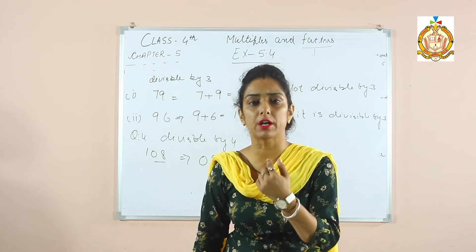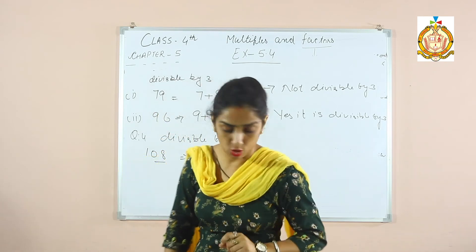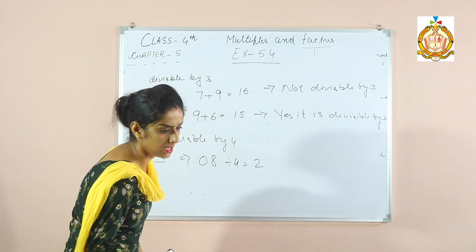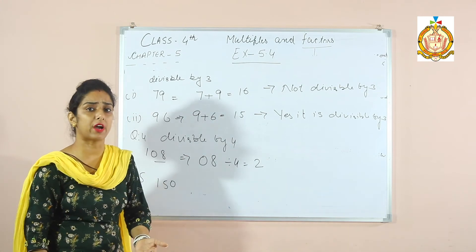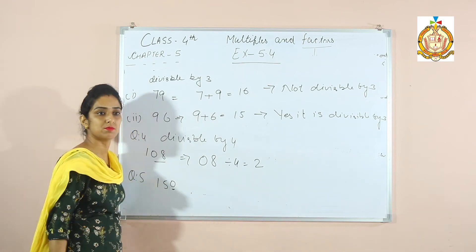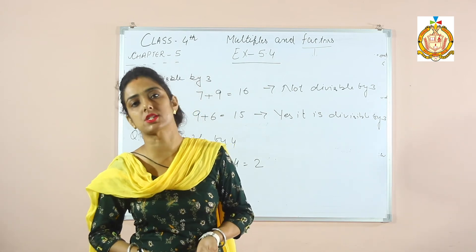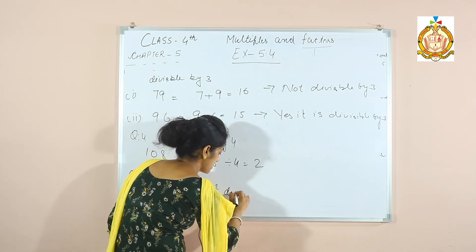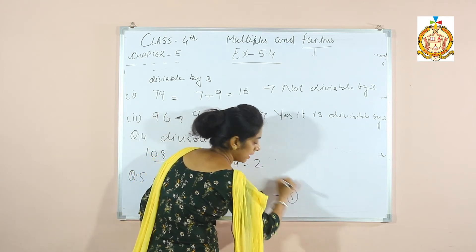For divisibility by 5, the last digit should be 0 or 5. For example, 150 — its last digit is 0, so it is divisible by 5.